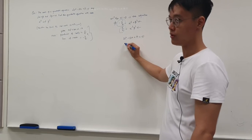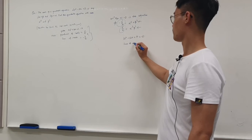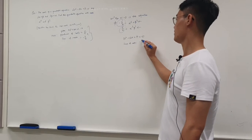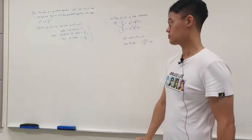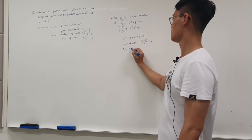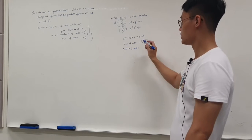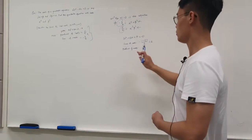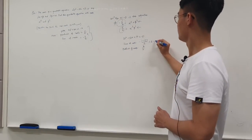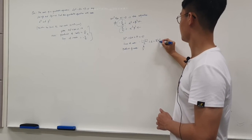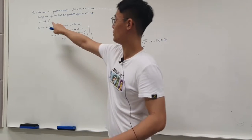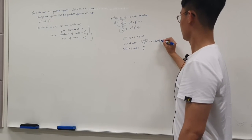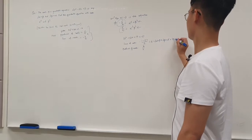The sum of the roots is negative b over a, so it's −12 over 2, which is 6. The product of the roots is 7 over 2. Now, what is the sum of the roots in terms of α and β? It's just 3α + 3β, because 2α + β + 2β + α = 3β + 3α.